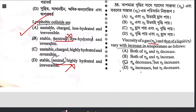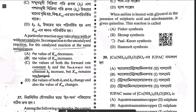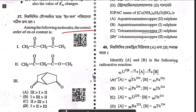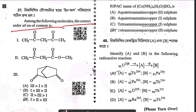Question thirty-five: viscosity of a gas increases with increasing temperature while viscosity of a liquid decreases — answer option D. Question thirty-six: a reaction with and without catalyst at the same temperature. Catalyst lowers activation energy, increasing the rate of both forward and backward reactions, but equilibrium constant is unchanged. So both forward and backward rate constants will increase, but Keq remains constant — option C. Question thirty-seven: correct order of enol content — answer option D.